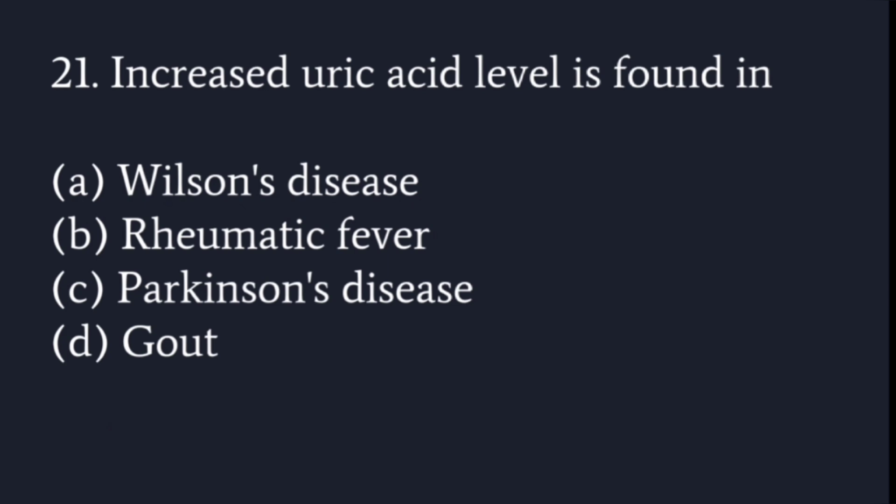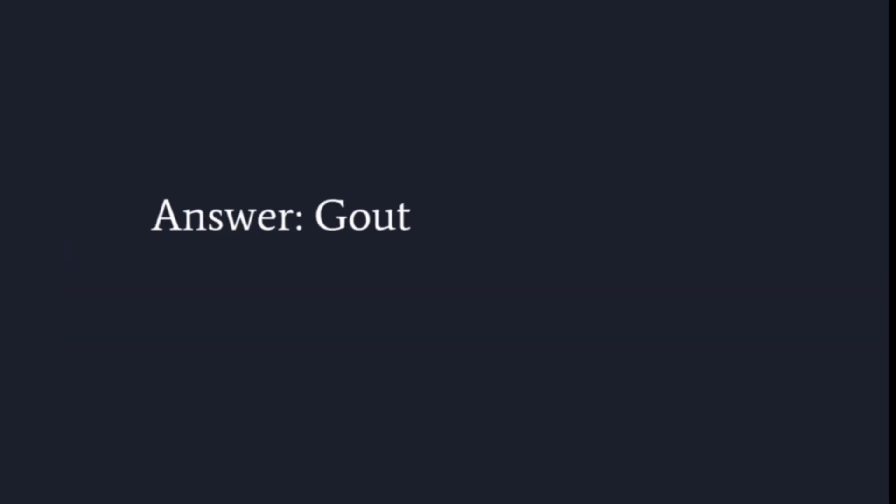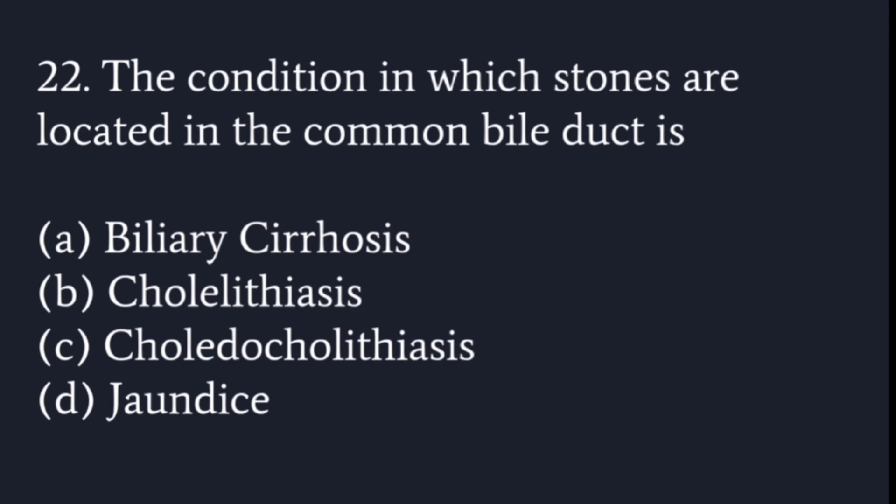Increased uric acid levels are found in: Wilson's disease, rheumatic fever, Parkinson's disease, or gout? In gout, we always check uric acid levels. Excess uric acid deposits in joints cause pain. The answer is gout.